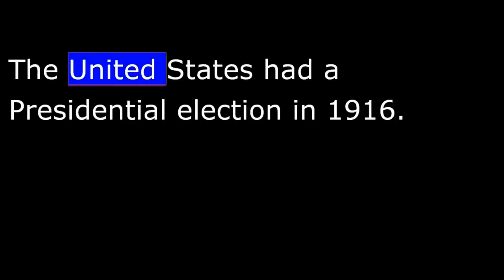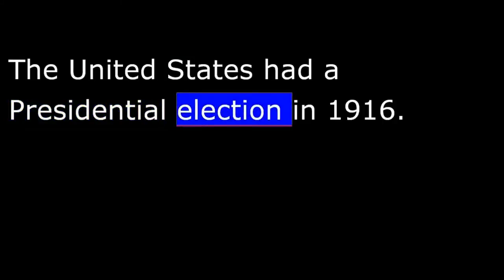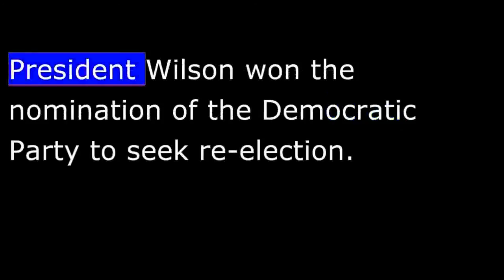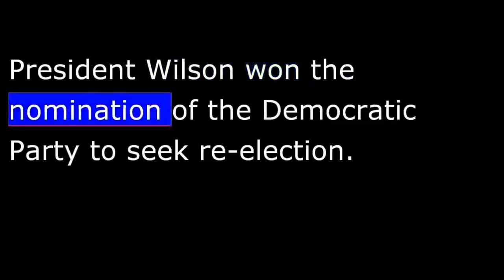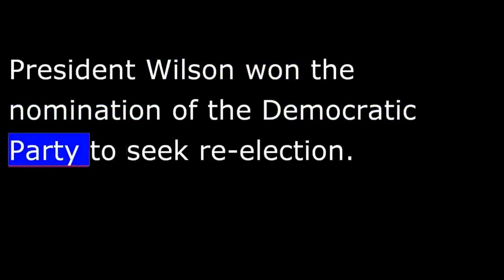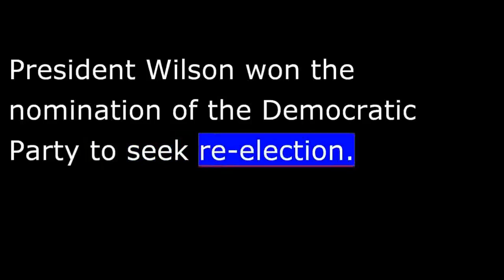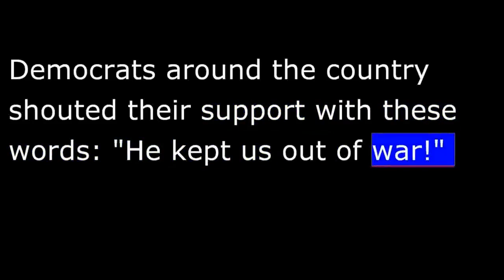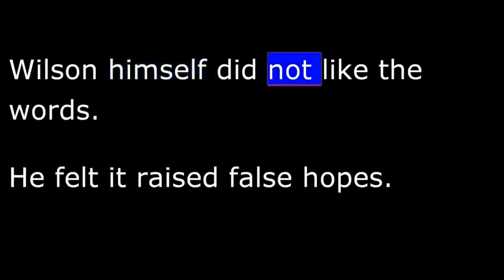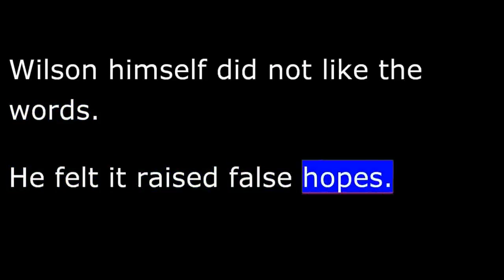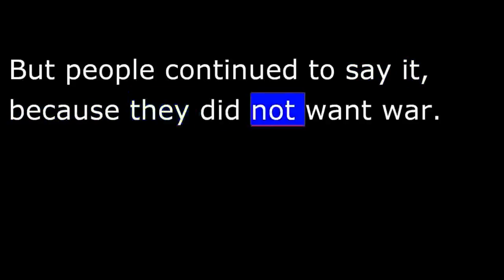The United States had a presidential election in 1916. President Wilson won the nomination of the Democratic Party to seek re-election. Democrats around the country shouted their support with these words: "He kept us out of war." Wilson himself did not like the words. He felt it raised false hopes. But people continued to say it because they did not want war.